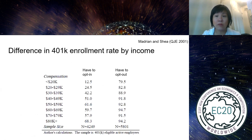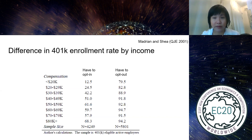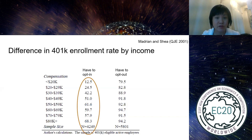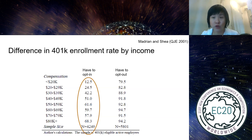Looking at take-up of commitment saving devices like 401k enrollment — Madrian and Shea's paper in the QJE — people who work for a firm with lower compensation participated in 401k at much lower rates than those with higher income: participation rates ranged from about 12% to 68% when enrollment required opting in. But they changed the default so that employees were automatically enrolled and had to opt out.